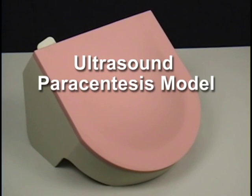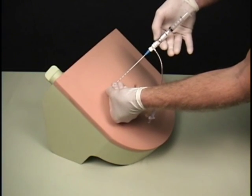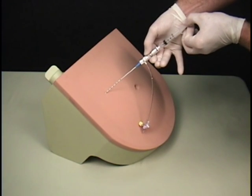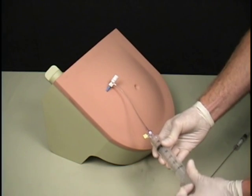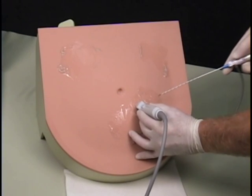Simulab's ultrasound paracentesis model is a realistic soft tissue model that allows for procedural accuracy when performing the paracentesis. The anatomically correct model allows the user to drain fluid from the peritoneal cavity in the abdomen using either external landmarks or with ultrasound guidance.